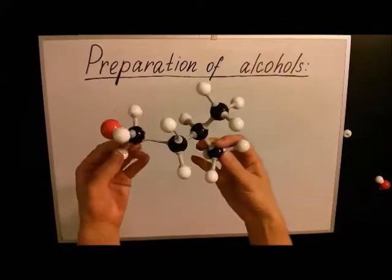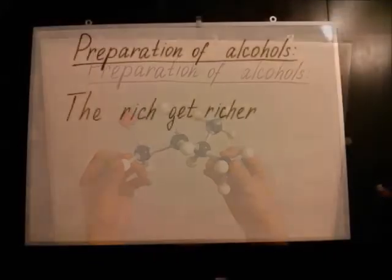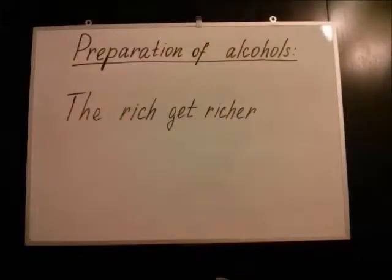A good way to remember where to place the hydrogen for the major product is to use the saying, the rich get richer, referring to the hydrogen being placed on the carbon that originally has more hydrogens.